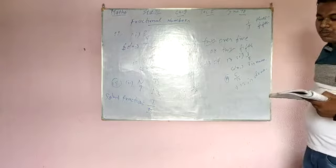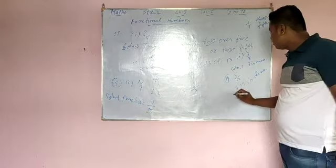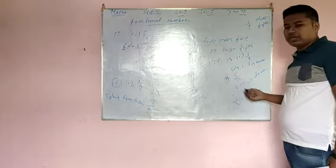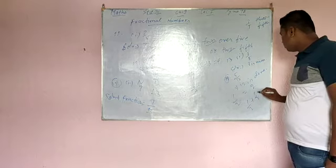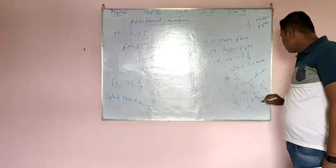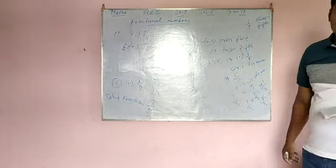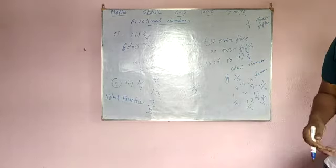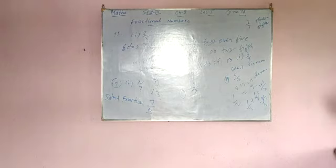And question 17: how many halves make a whole? The answer is 2. How? 1 by 2 plus 1 by 2 — we will add and get 1. So two halves make a whole. In lecture number 2, I will go for fractions on number line.